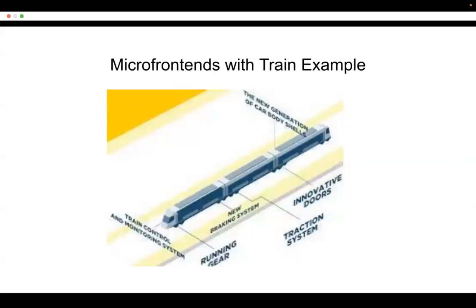To understand micro front-end, let's use the train example. A train has an engine, a guard, and multiple coaches — one with AC, one with sleeper, one with seater. If something goes wrong with one coach, you can remove it. That's like micro front-end: different independent modules that can be managed separately.